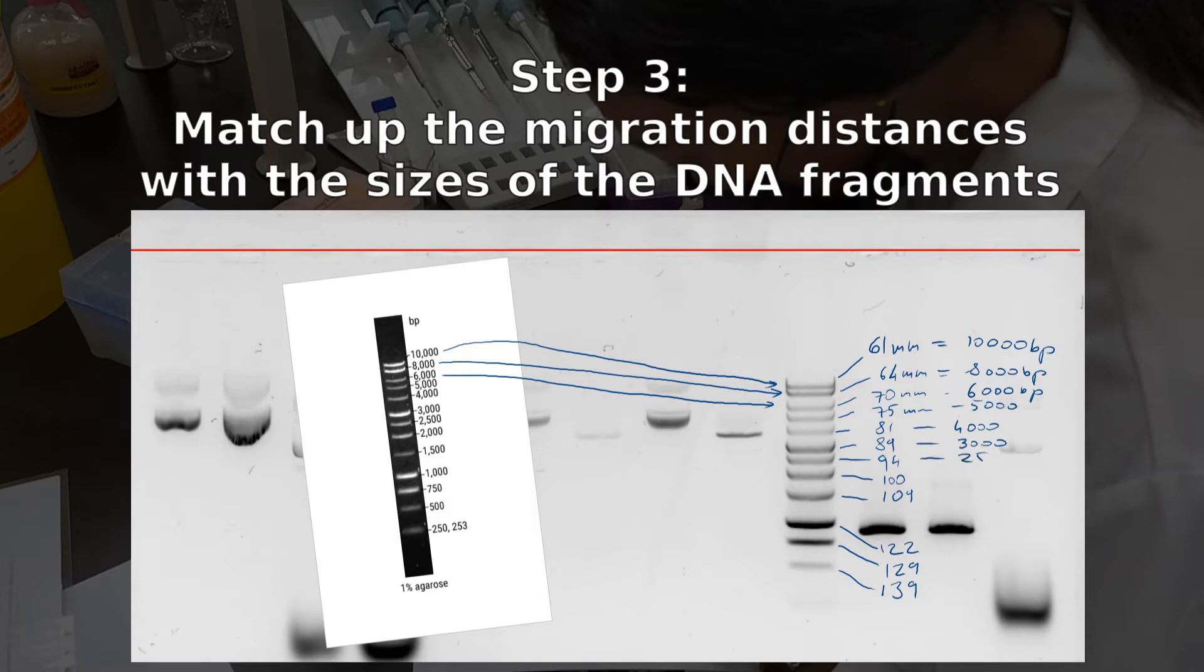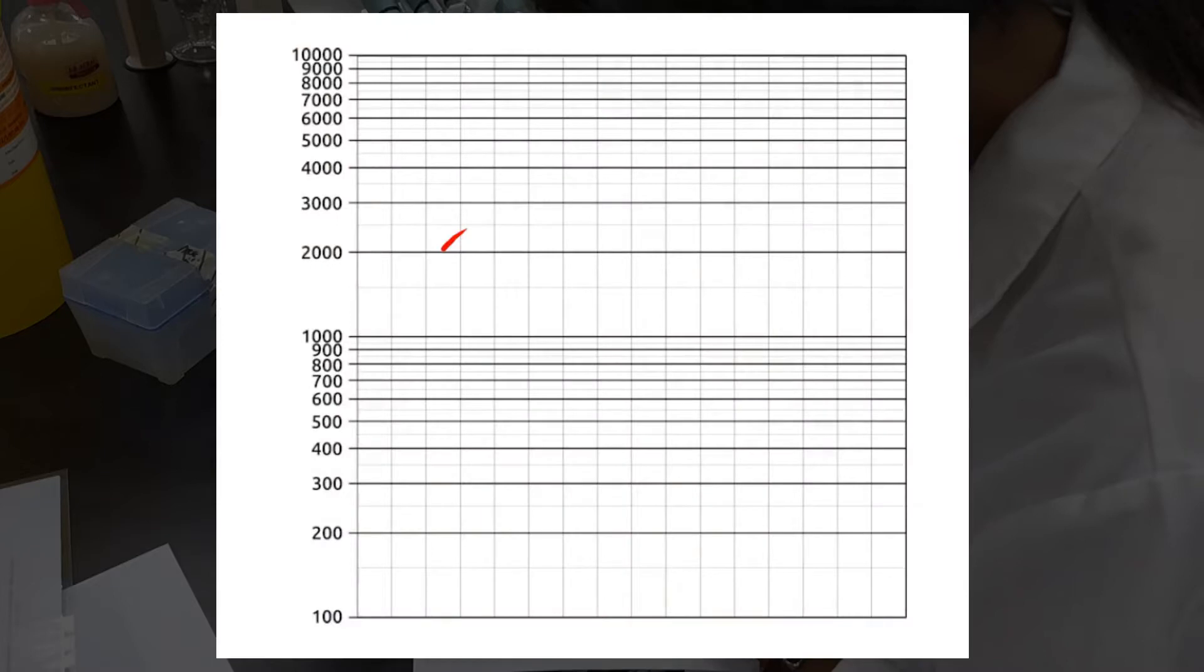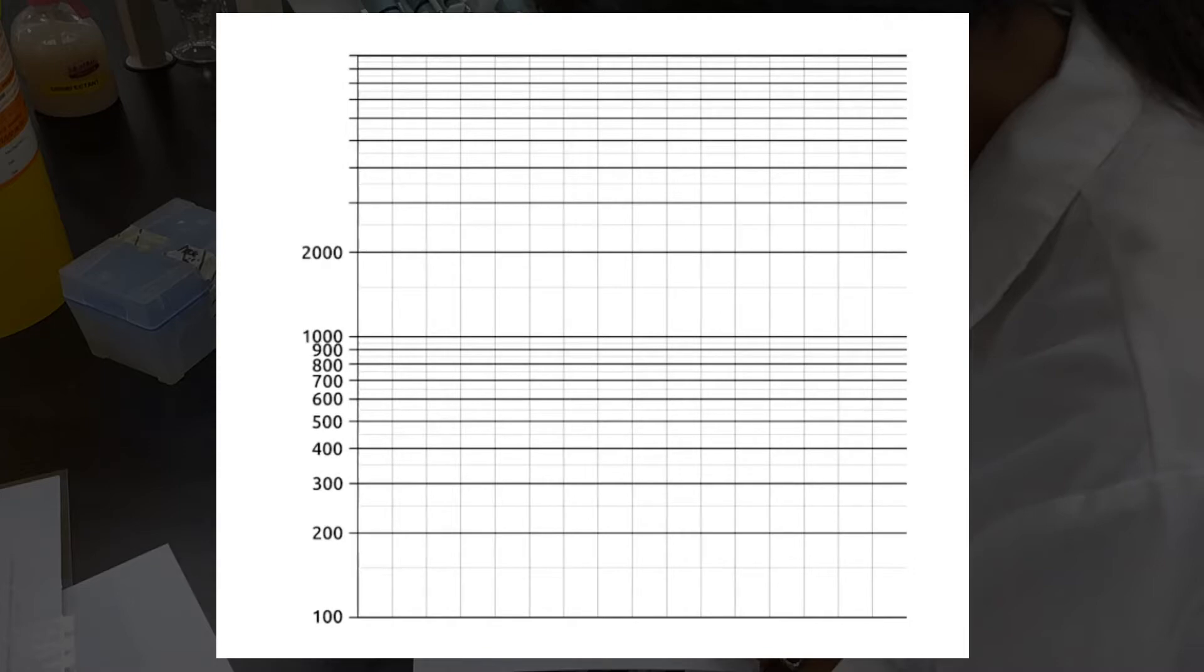Once you have the migration distances along with the sizes of the fragments, you're then going to graph these on a semi-log sheet of paper. Now, semi-log paper might seem a little confusing, but trust me, it simplifies this whole process.